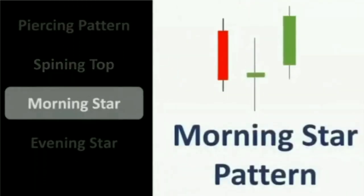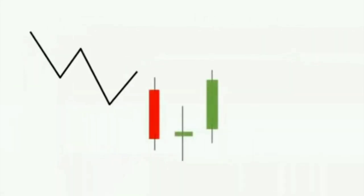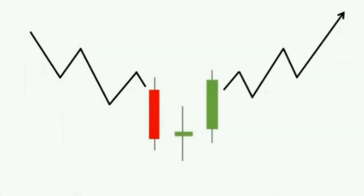The next candlestick pattern is the morning star pattern, which is comprised of three candles: a red bearish candle where the bears are in control, a doji candle indicating indecision in the market, and after that a green candle indicating the bulls have taken over. After formation of this pattern, the downtrend in the market will be converted into an uptrend. Like any other candlestick pattern, if this pattern is formed with huge volume — if the volume near these three candles is higher than usual — it indicates a perfect candlestick pattern and the chances of pattern failure decrease.